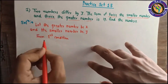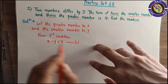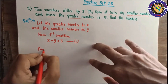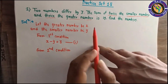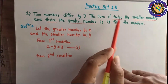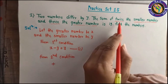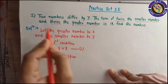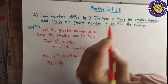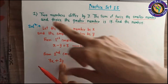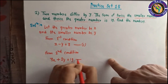From the first condition: x minus y equals 3. This is equation number 1. From the second condition: the sum of twice the smaller number, which is 2y, and thrice the greater number, which is 3x, is 19. So 2y plus 3x equals 19. This is equation number 2.